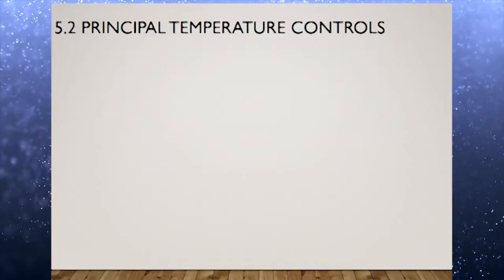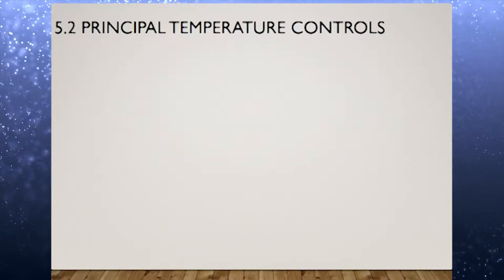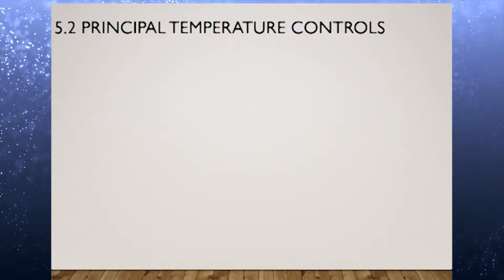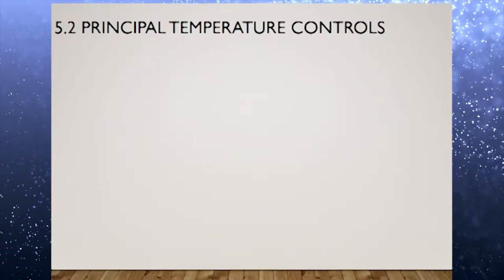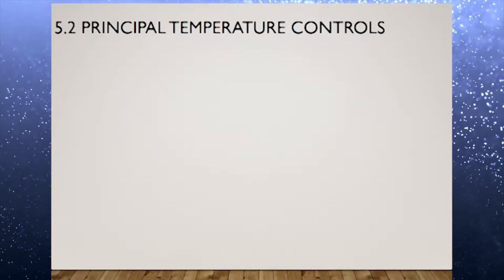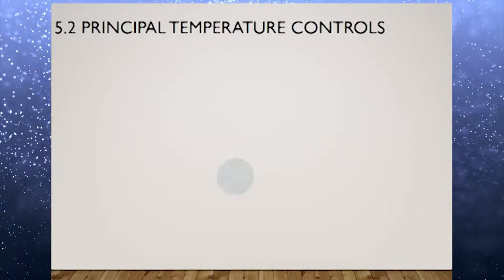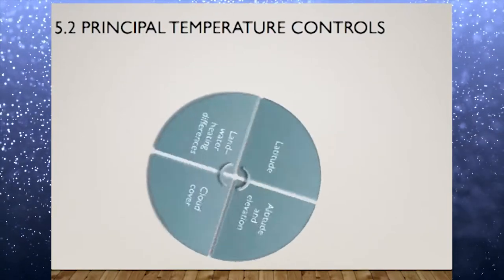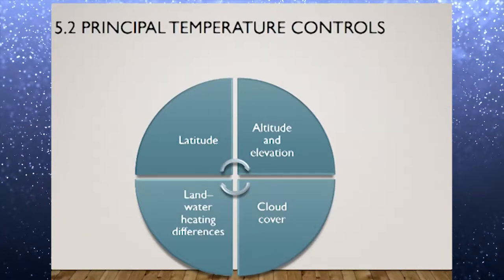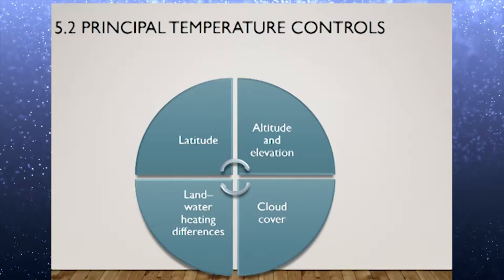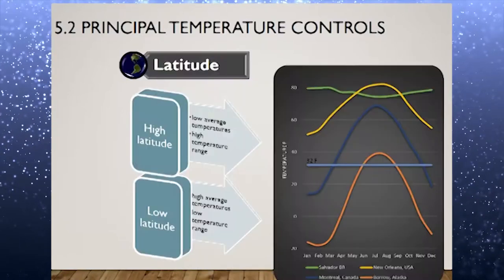In chapter 2 we discussed the sun's apparent position in the sky related to latitude. This factor is the most critical temperature control and is directly related to seasonality. Other factors such as elevation, cloud cover, and land-water heating difference also result in Earth's temperature patterns. Latitude is the most single important one, followed by altitude and elevation, land-water heating difference, and cloud cover.